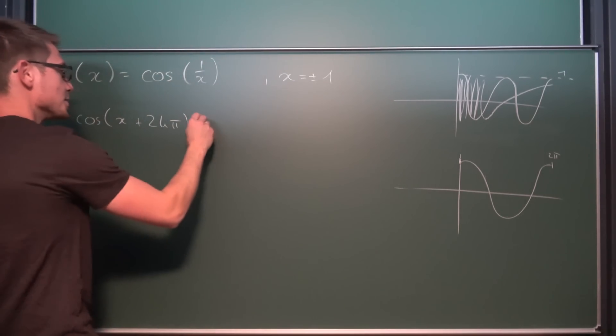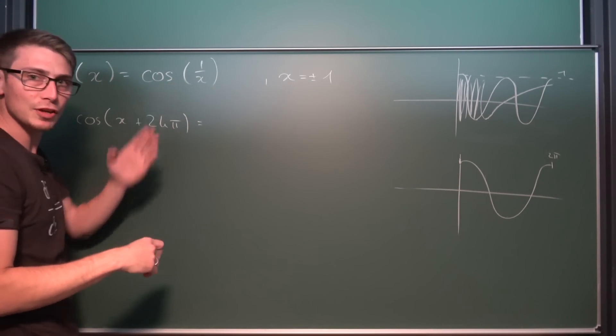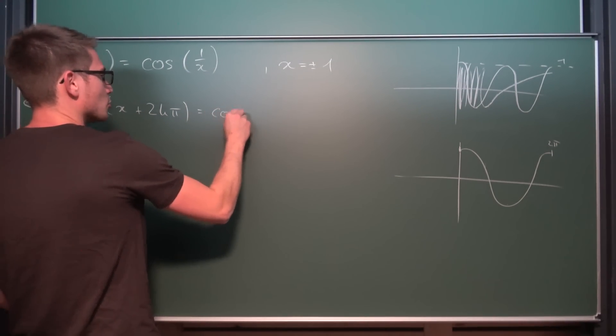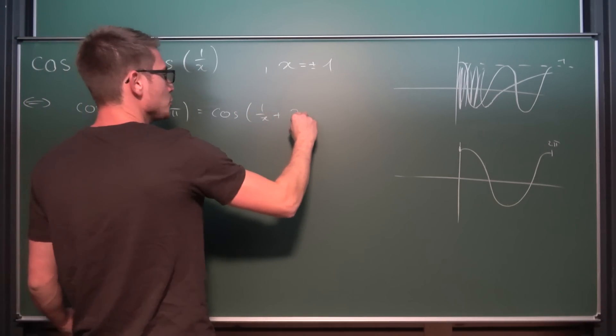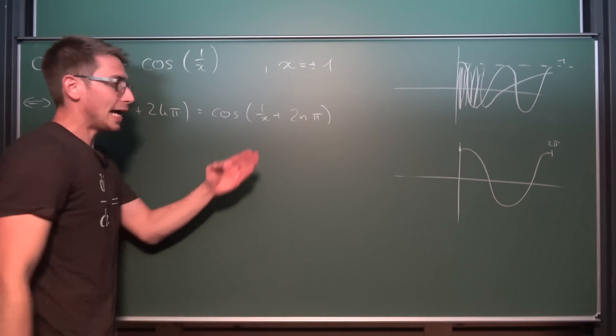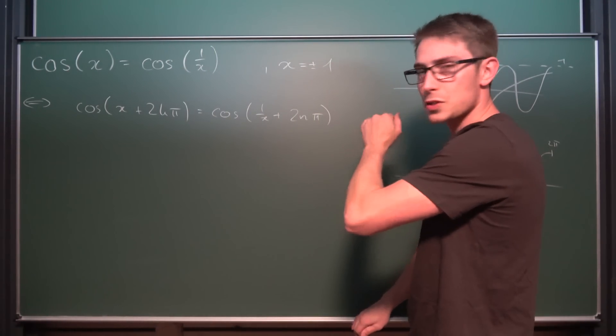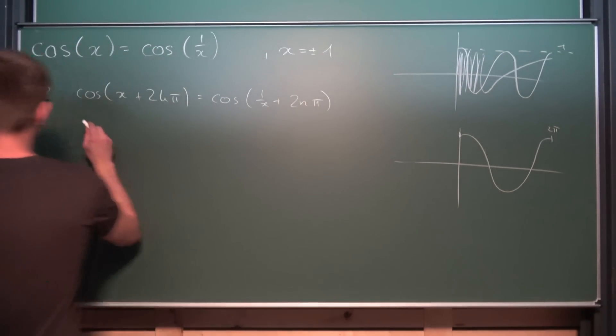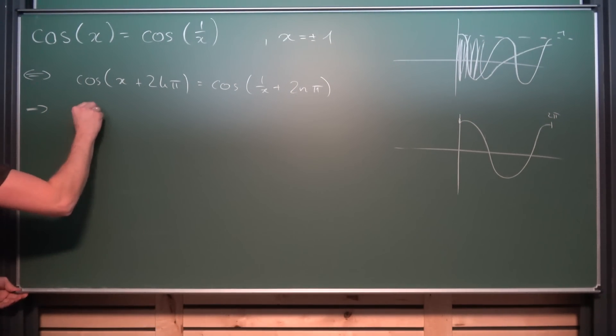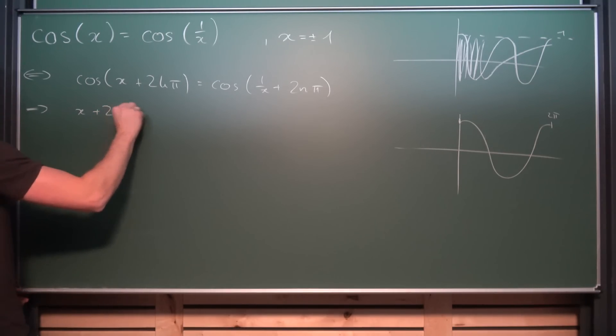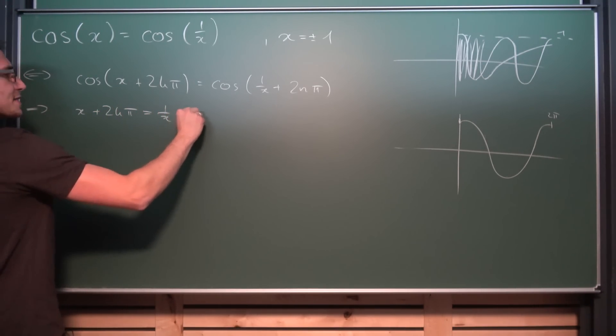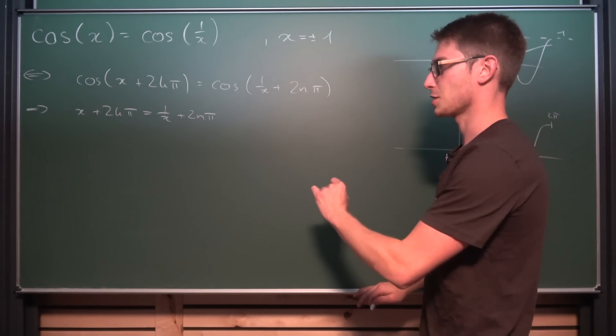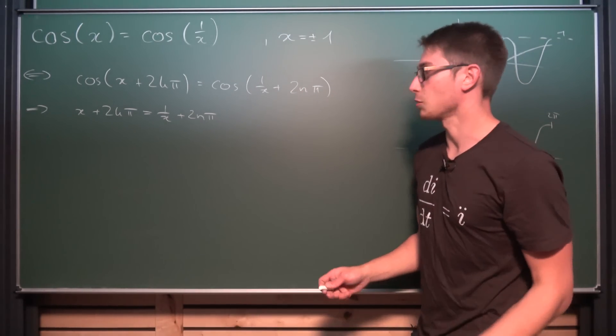Meaning we can rewrite this problem as being that the cosine of x plus 2kπ, where k is element of the positive and negative integers, is equal to cosine of 1/x plus 2nπ. And with that out of the way, we can without any restrictions whatsoever now apply the inverse cosine on both sides, leaving us with the following equation: x + 2kπ is equal to 1/x + 2nπ, where n and k are element of the positive and negative integers.